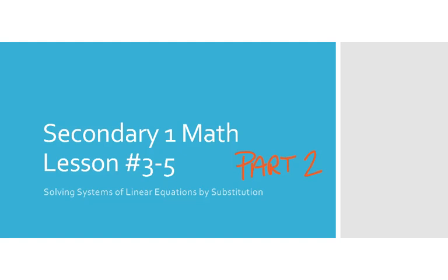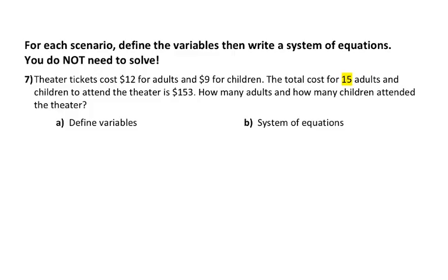Continuing the last part of Lesson 3-5, we are going to talk about story problems. Today we're going to talk about how to set up story problems — we're not going to solve them today. Looking at number 7, the directions say for each scenario, define the variables. That's the first thing we have to do. Then we're going to write a system of equations.